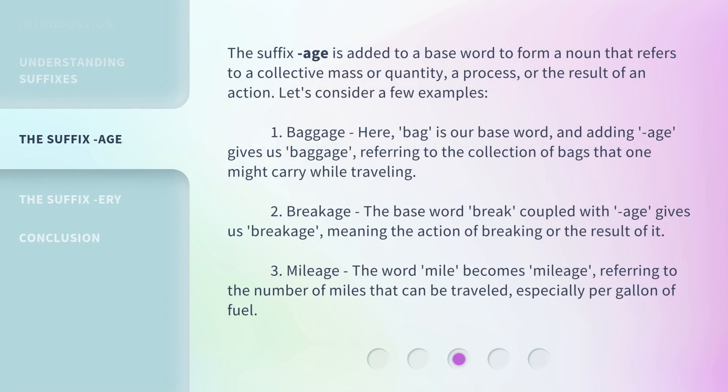The suffix '-age' is added to a base word to form a noun that refers to a collective mass or quantity, a process, or the result of an action. Let's consider a few examples. First, 'baggage': here, 'bag' is our base word, and adding '-age' gives us 'baggage', referring to the collection of bags that one might carry while traveling.